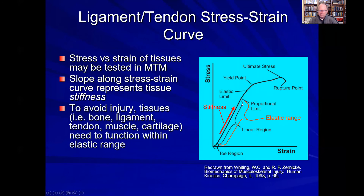When we test materials such as ligament, tendon, cartilage, or bone, what typically happens is that as a material is stretched it develops more stress, and when relaxed it returns to its original shape. This means it is functioning within its linear region or elastic range — this is an elastic deformation. At low loads, the body's tissues including bone, ligament, tendon, muscle, and cartilage all tend to act in an elastic range, returning to their original shape when unloaded.